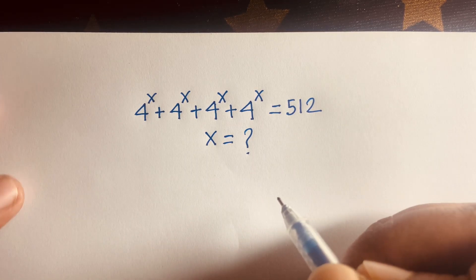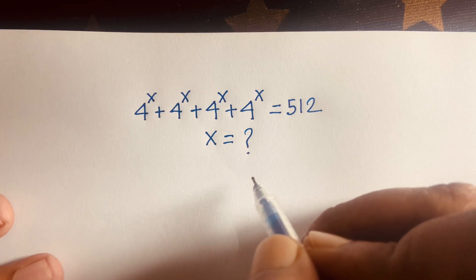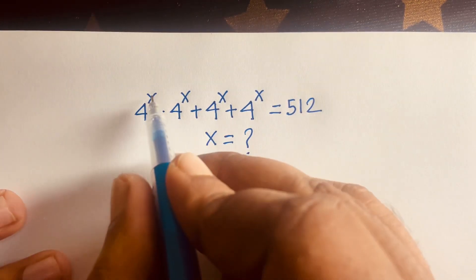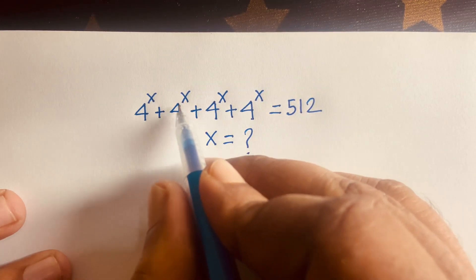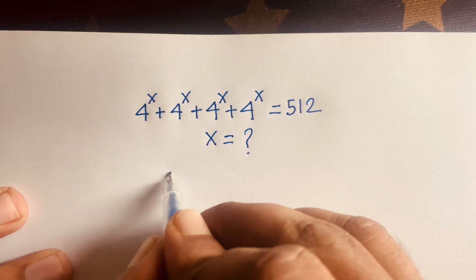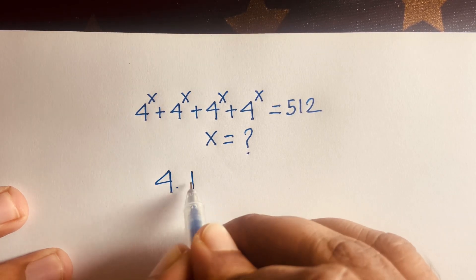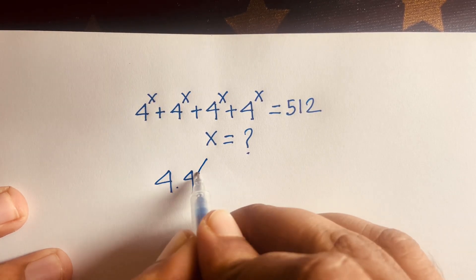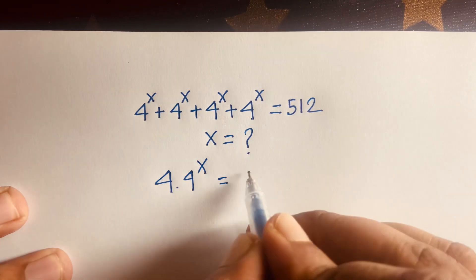So how to solve this question? First of all, we have 4 to the power x, 4 to the power x, and 4 to the power x — so four terms of 4 to the power x is equal to 512.